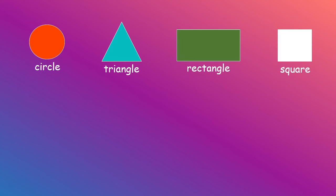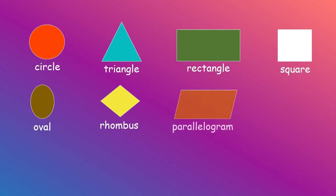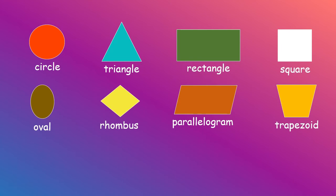Now, I want you to look at some examples of 2D shapes. Examples of 2D shapes. We have circle, triangle, rectangle, square, oval, rhombus, parallelogram, trapezoid, pentagon, and hexagon. However, these are not all the 2D shapes that we have.